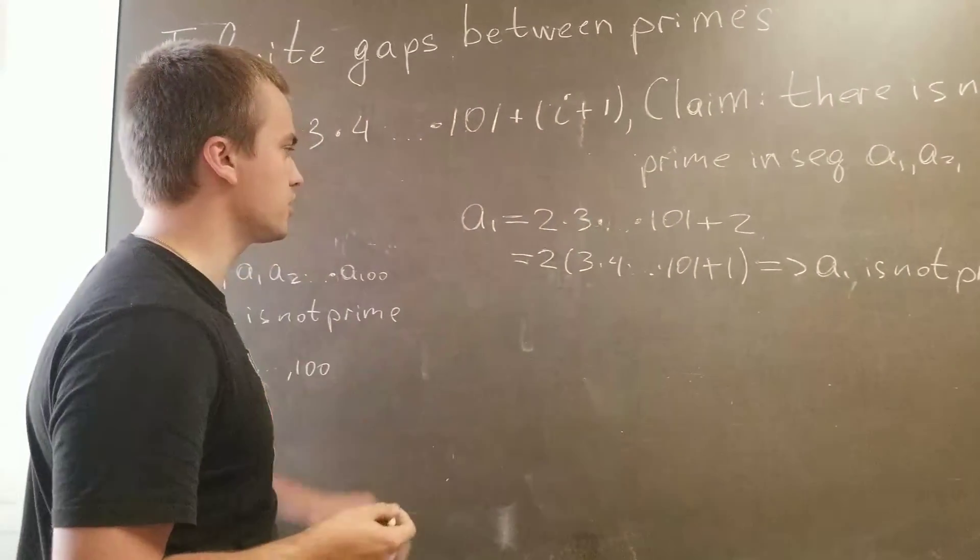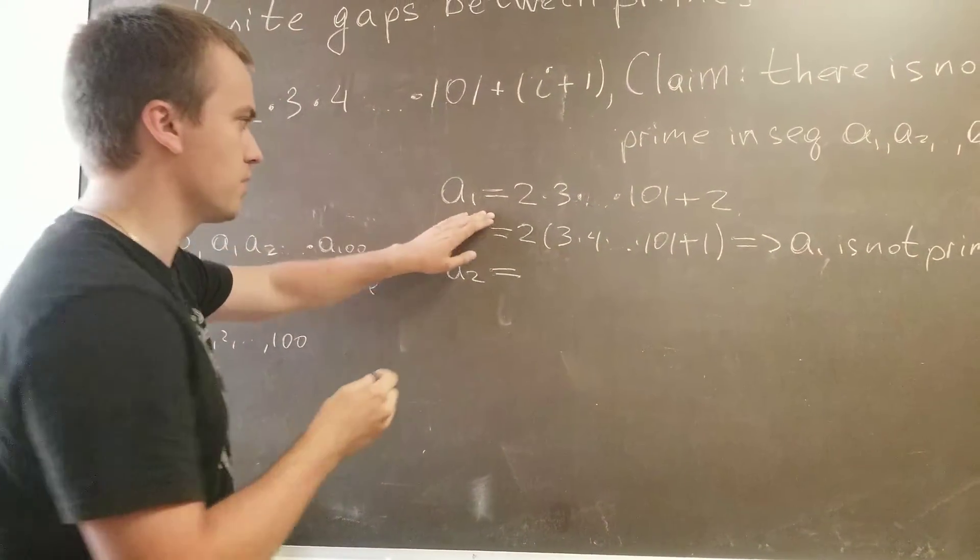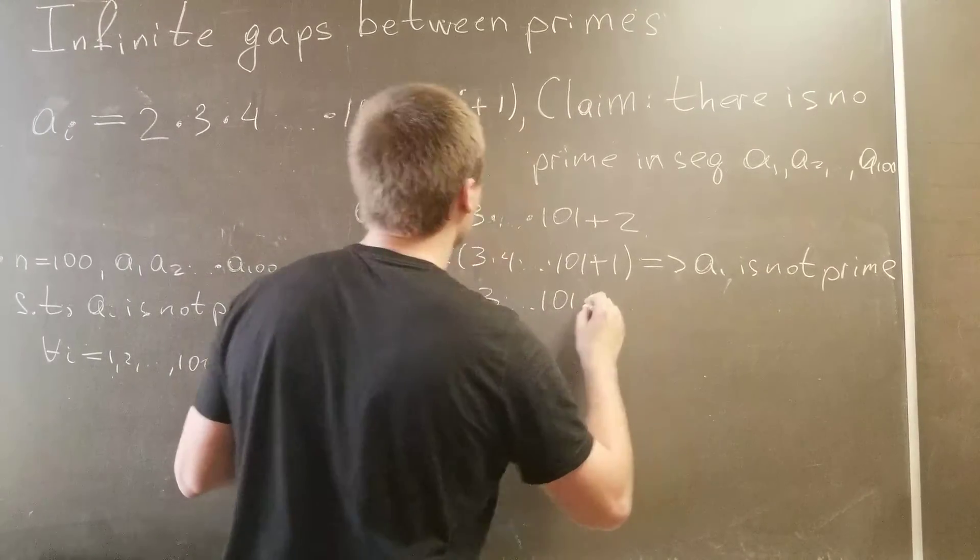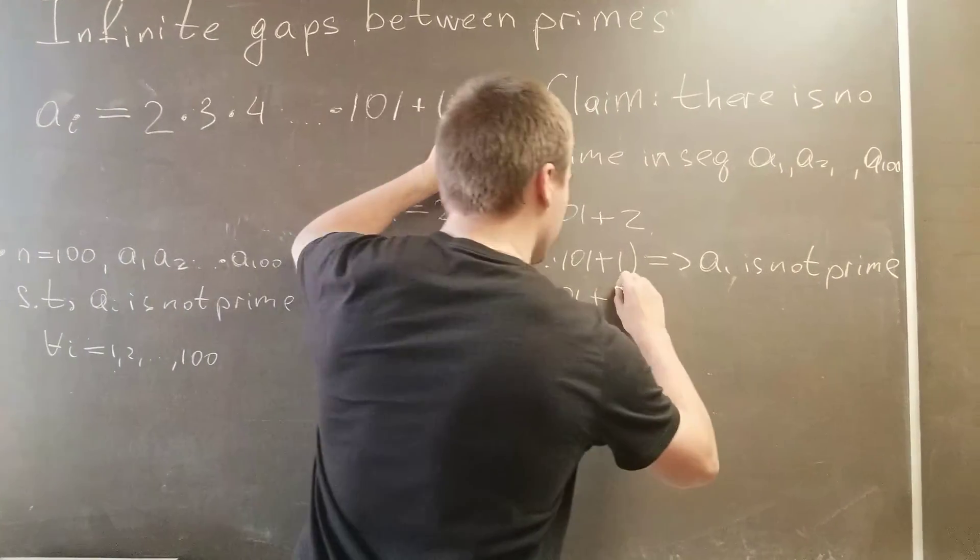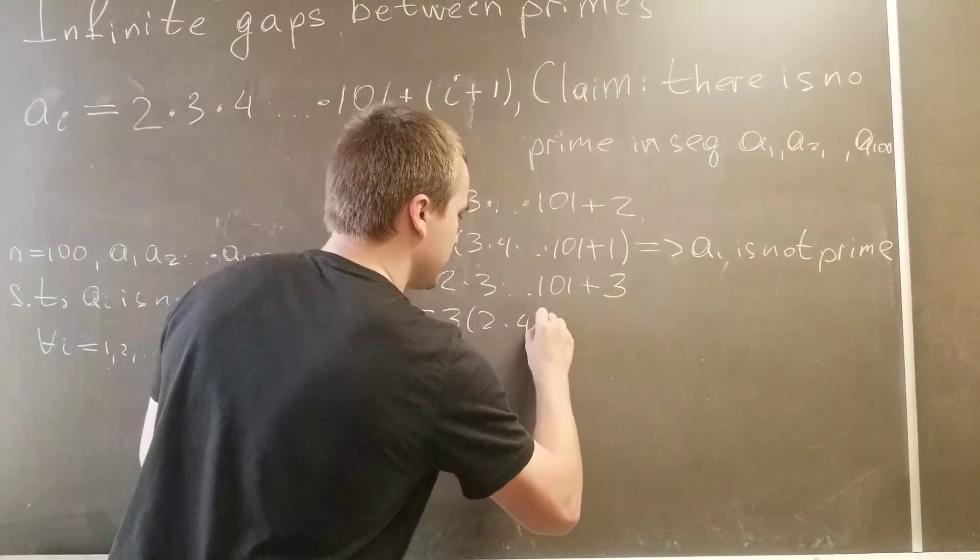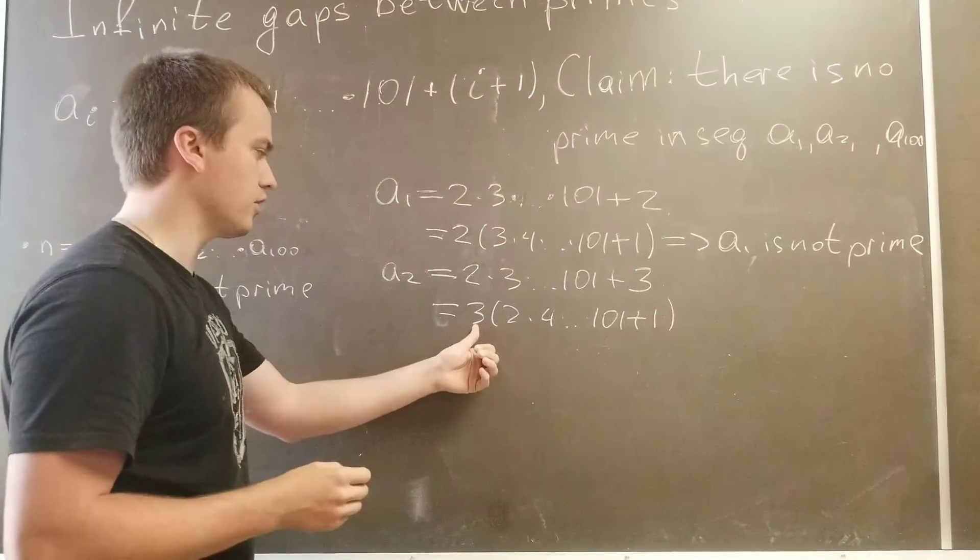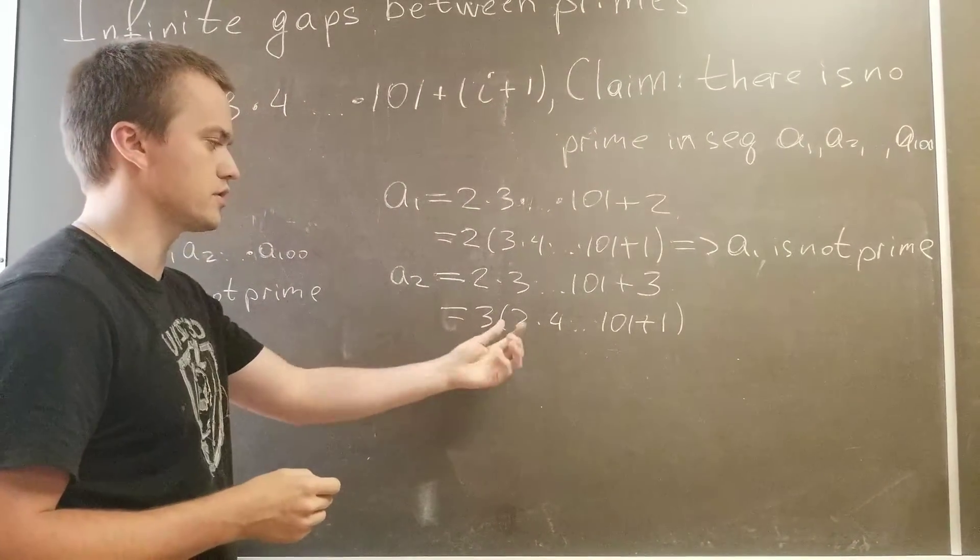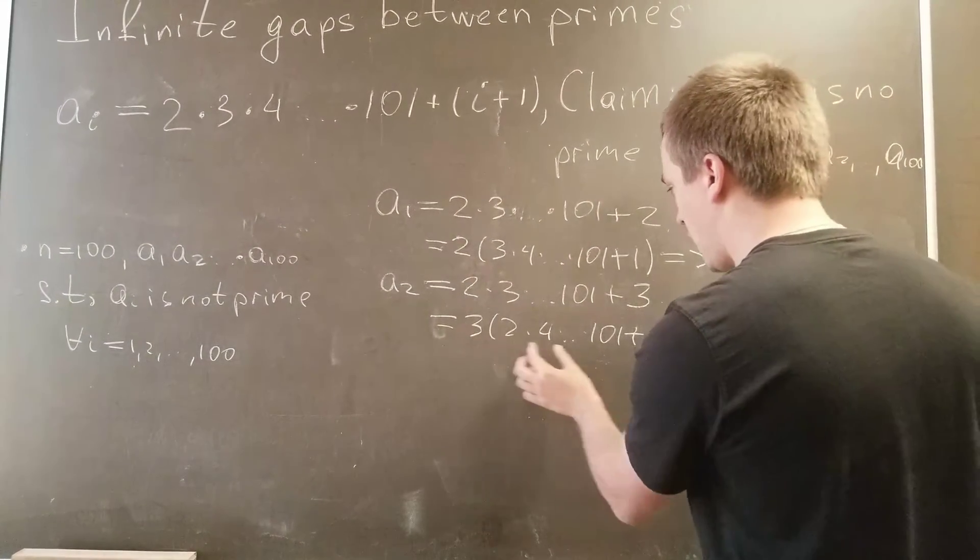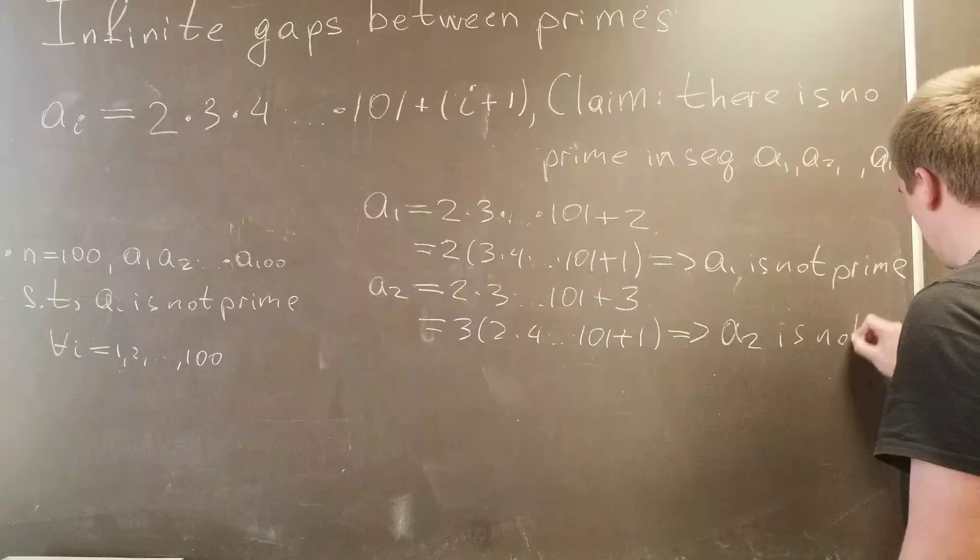In the same way you can show that a_2 is not prime. Why? Because using the same procedure, I get 2 times 3 times... times 101 plus 3. And here I'm going to factor out 3, so we get 3 times (2 times 4 times... times 101 plus 1). And here again you can see that a_2 is a product of two numbers, each of which is bigger than 1. So a_2 is not prime.